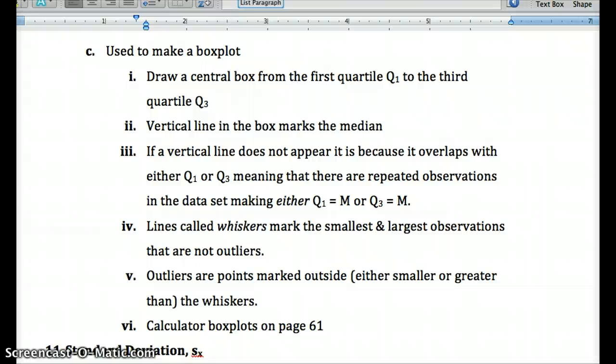Lines are called whiskers that mark the smallest and largest observations that are not outliers. Outliers we could mark smaller or greater than the whiskers using an X or there's other asterisks or other things like that.